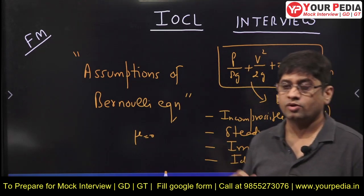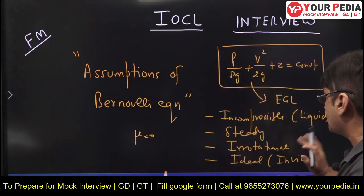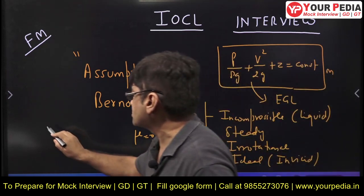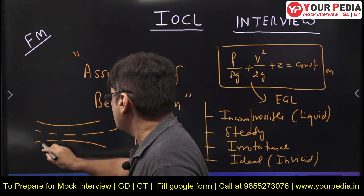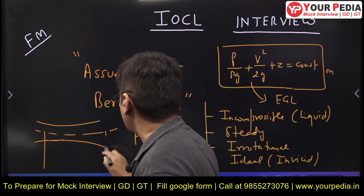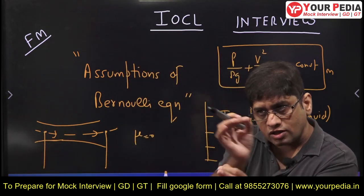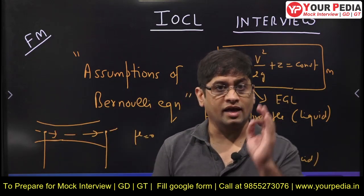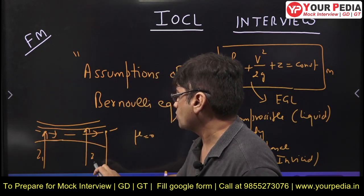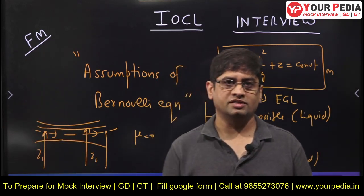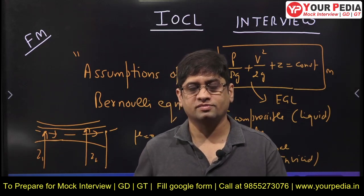So the four assumptions are: incompressible, steady, irrotational, and ideal. There is one more assumption related to its application — all terms must be calculated along one particular streamline. The tangent drawn at a streamline gives the direction of flow. You cannot calculate Z1 on one streamline and Z2 on a different streamline. This is a very commonly asked question in interviews. Revise well. Thank you.